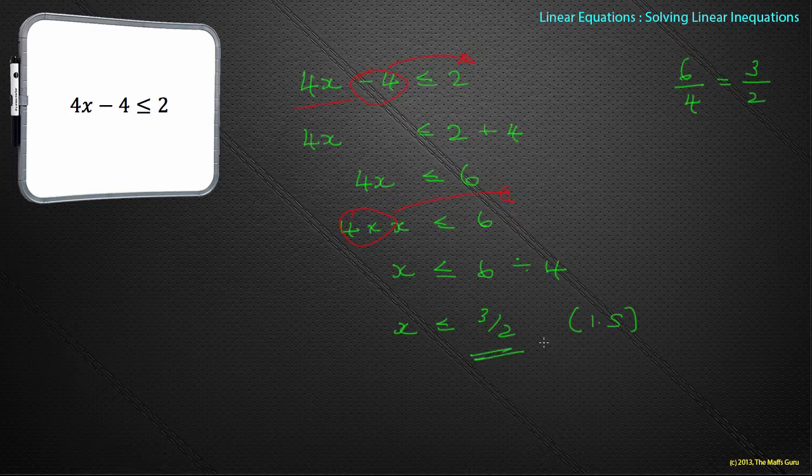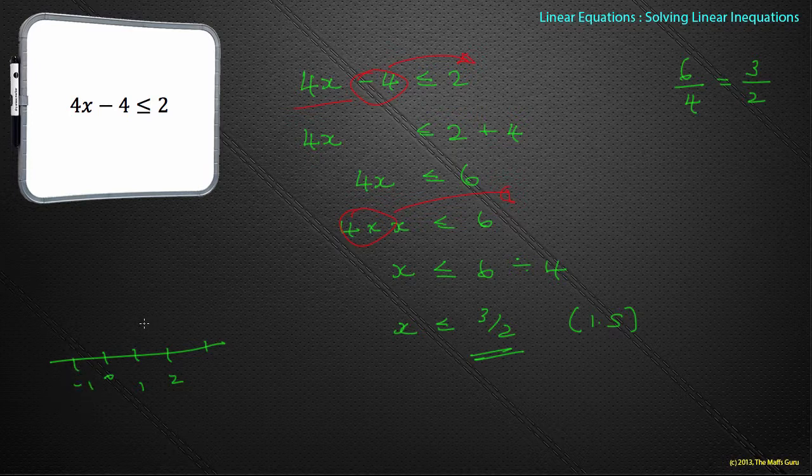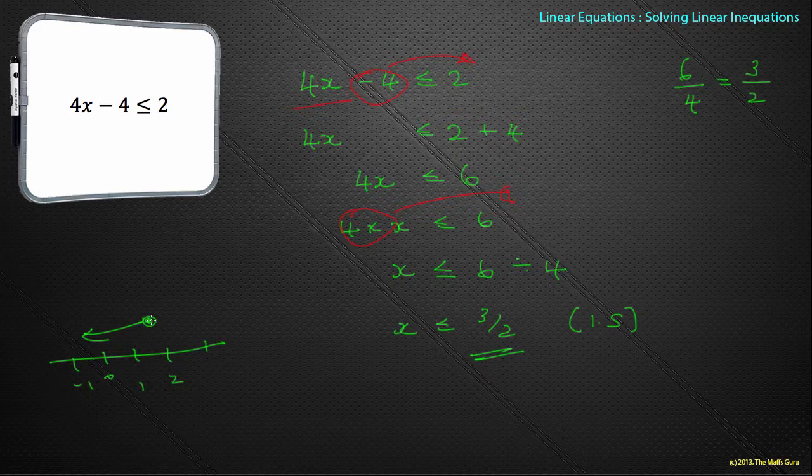How would I draw that on the number line? Exactly the same as before. There's my number line. Let's put the values on: 1.5 says 2, 1, 0, minus 1. We do a circle between them. We do an arrow because it's less than or equal to, and we would color in the circle simply because we have it as equal to.